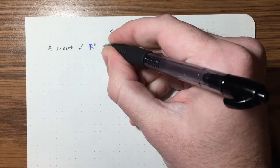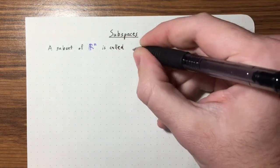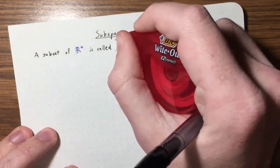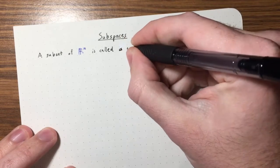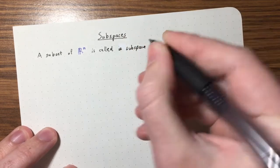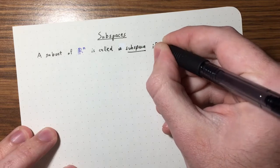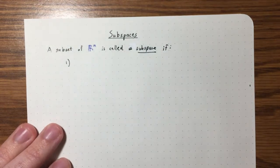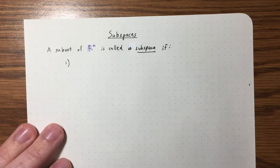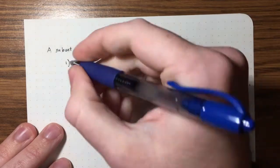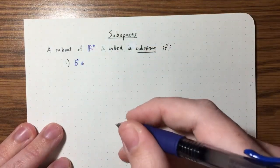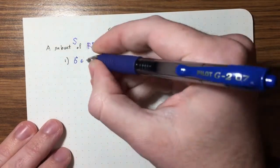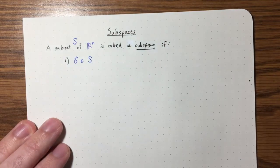A subspace of Rn is called a subspace if the following conditions hold. We're going to have three conditions. The first condition: we want the zero vector to be in our subspace. Let's call the subset S. So we want the zero vector to be in S.